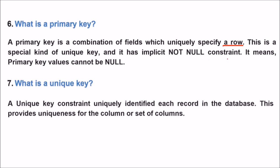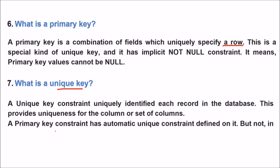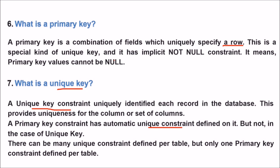What is a unique key? A unique key constraint uniquely identifies each record in the database, providing uniqueness for a column or set of columns. There can be many unique constraints defined per table, but only one primary key constraint defined per table — so there can be many unique keys but only one primary key.